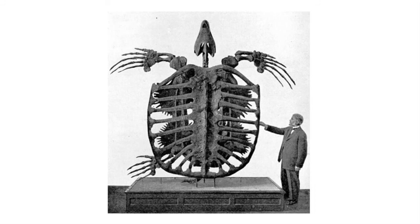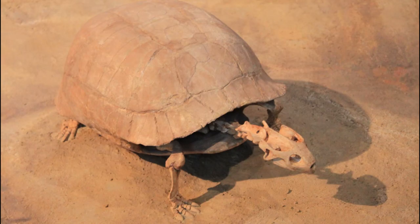Turtles would continue to be a successful group, with forms becoming highly specialized for marine environments such as sea turtles, which evolved during the Cretaceous, as well as terrestrial turtles called tortoises. Tortoises originated in the early Cenozoic, with the fossil Hadrianus, which is fairly common in North America during the Middle Eocene, and Stylemys from the Late Eocene of Colorado and Wyoming.